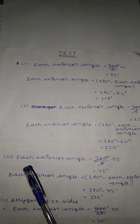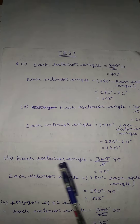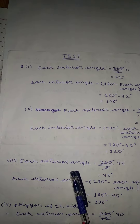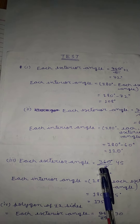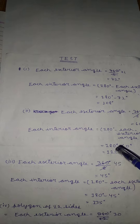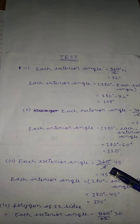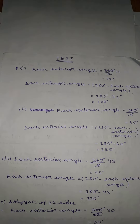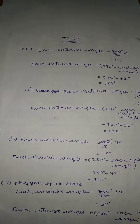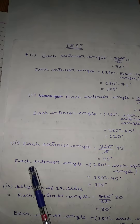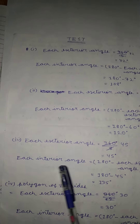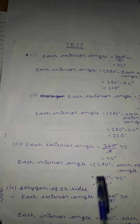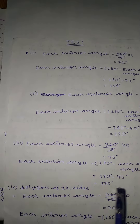For question three, the octagon: each exterior angle is equal to 360 divided by 8, which equals 45 degrees. In the same way, each interior angle is 180 minus 45, which equals 135 degrees.